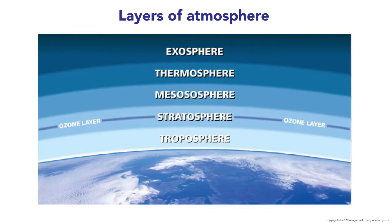There are different layers of the atmosphere. The first layer is the troposphere, then the stratosphere, mesosphere, thermosphere, and exosphere. Let us discuss each one by one.